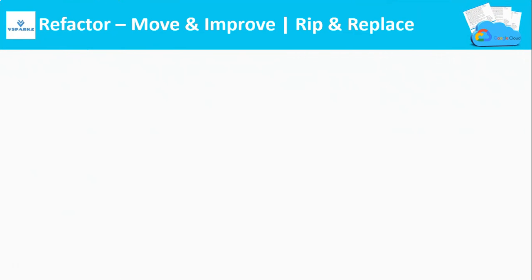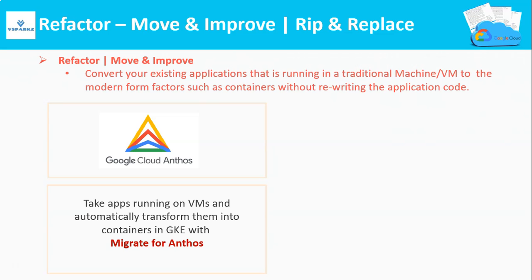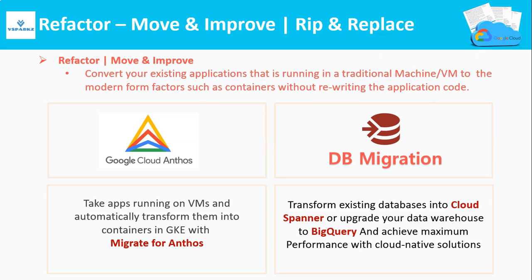The last type is Refactor, or Move and Improve, also called Rip and Replace. In this type of migration, your traditional VM-based applications are converted to modern form factors such as containers without rewriting the application code. We have a product called Google Cloud Anthos that takes apps running on on-premises VMs and automatically transforms them into containers to run in Google Kubernetes Engine. The underlying VM-based platform is changed to a modern form factor — containers — with no changes to application code. Similarly, database migration transforms your existing traditional DB into Google Cloud Spanner, or upgrades your data warehouse to BigQuery, to achieve maximum performance with cloud-native solutions.